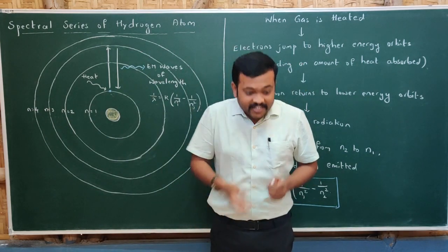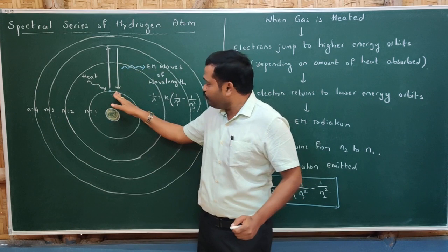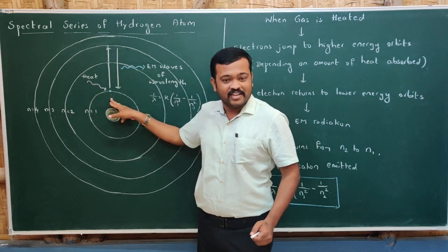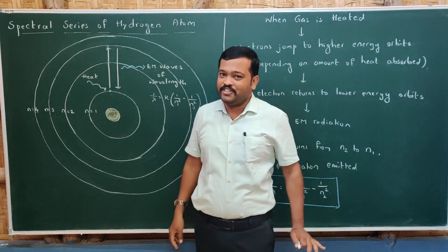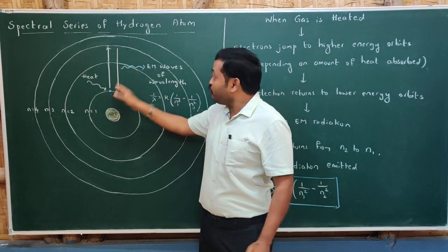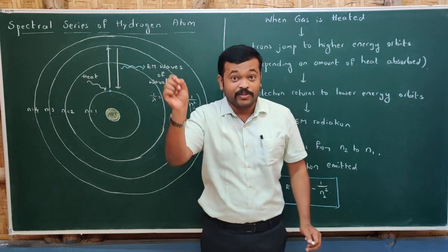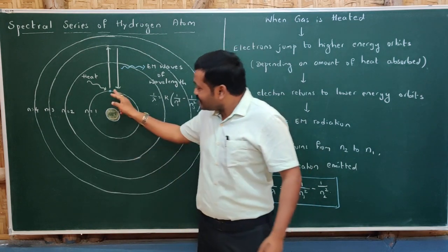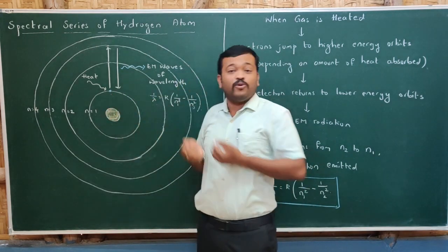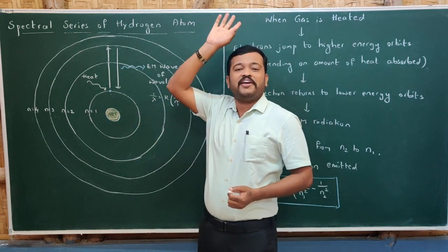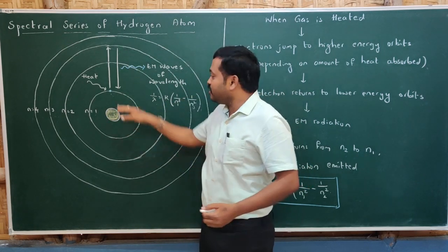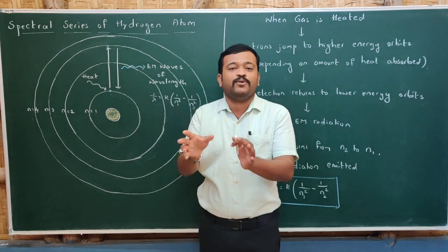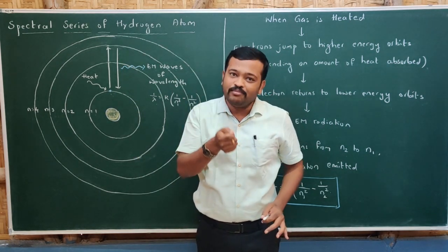When a gas is heated, that heat is absorbed by the electrons. When an electron absorbs heat, it jumps to a higher energy orbit. Which energy orbit it jumps to depends upon the amount of heat absorbed — if it absorbs more, it goes to a higher energy level; if less, it goes to the next energy level.